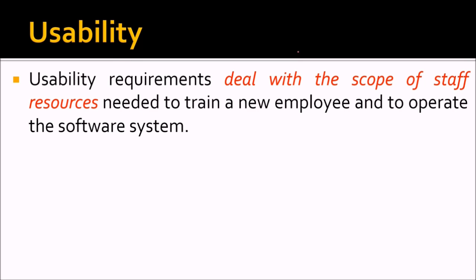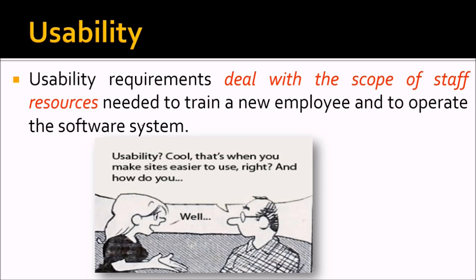Usability means the software is easy to use and easy to learn — if you revisit it, you can use it again. Usability requirements deal with the scope of staff resources needed to train a new employee and to operate the software system easily. We can learn it easily and perform tasks with it as well.